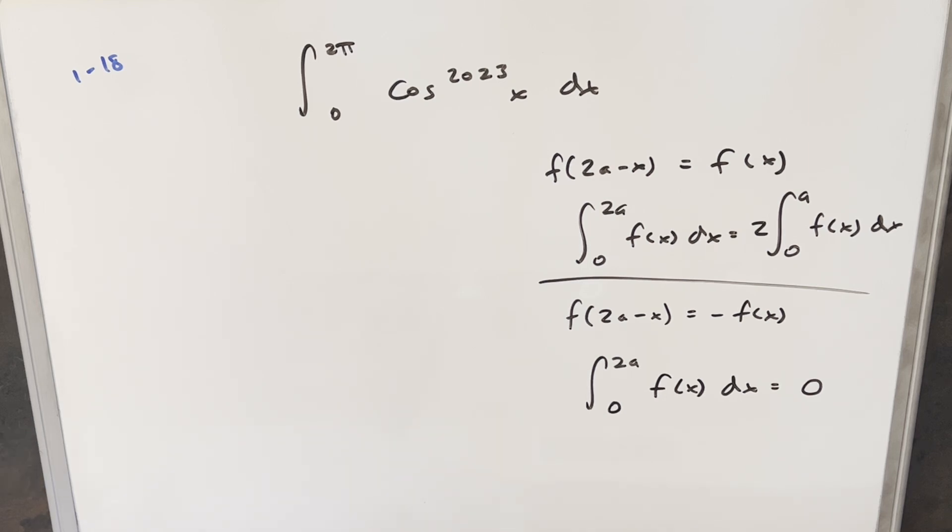We have the integral from 0 to 2π, cosine^(2023) x dx. And I think this is actually my third time doing this problem. I kind of got obsessed on doing it different ways, and now I just can't stop.